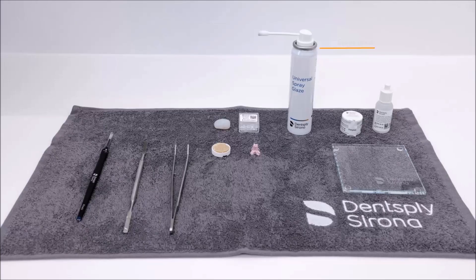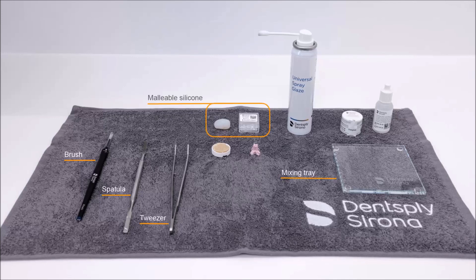In addition to Dentsply Sirona spray glaze, a glaze paste is also available, which we are going to use in this case. For this process, we take a Dentsply Sirona brush, a spatula, a tweezer, malleable silicone, and a mixing tray.